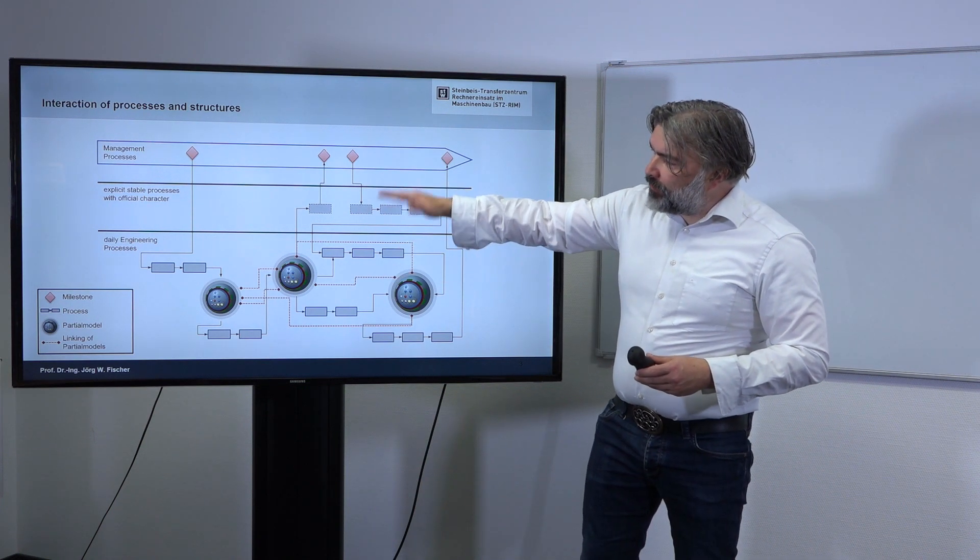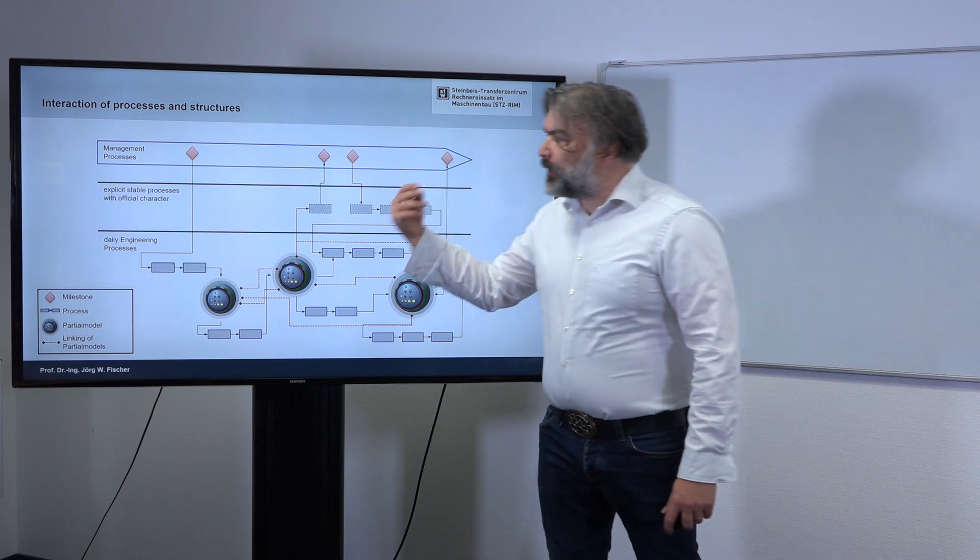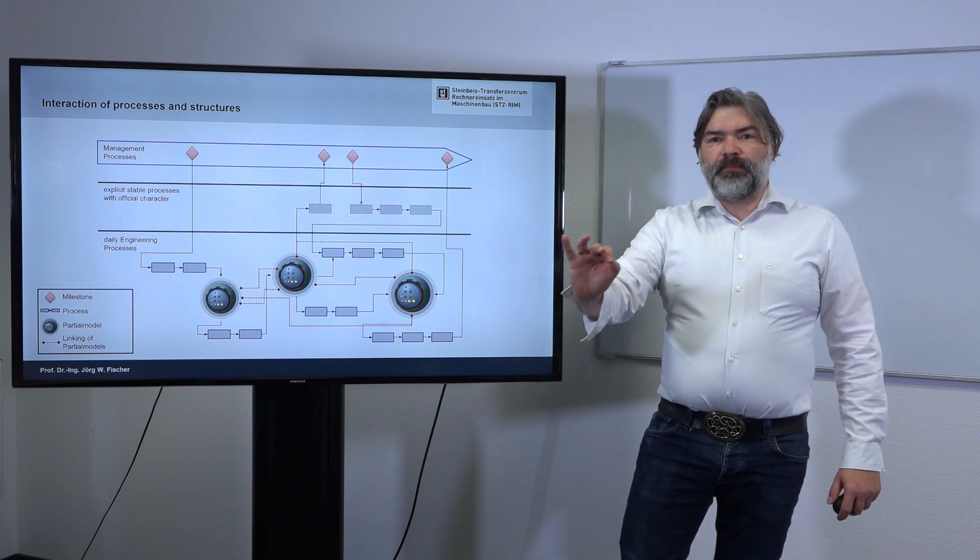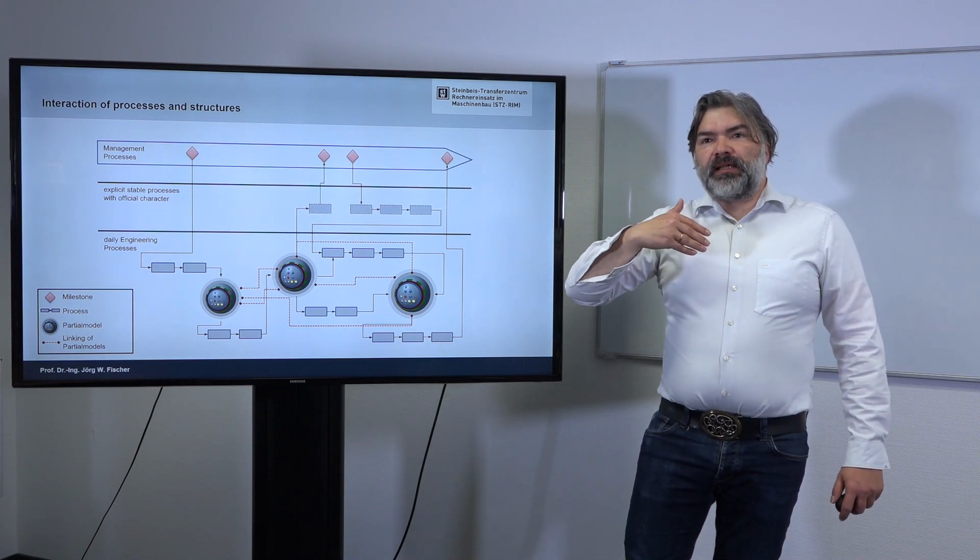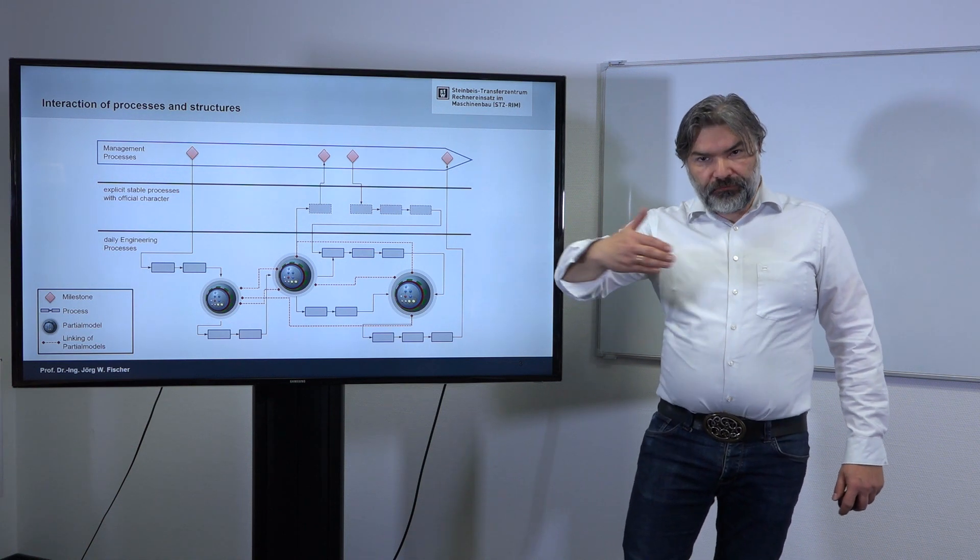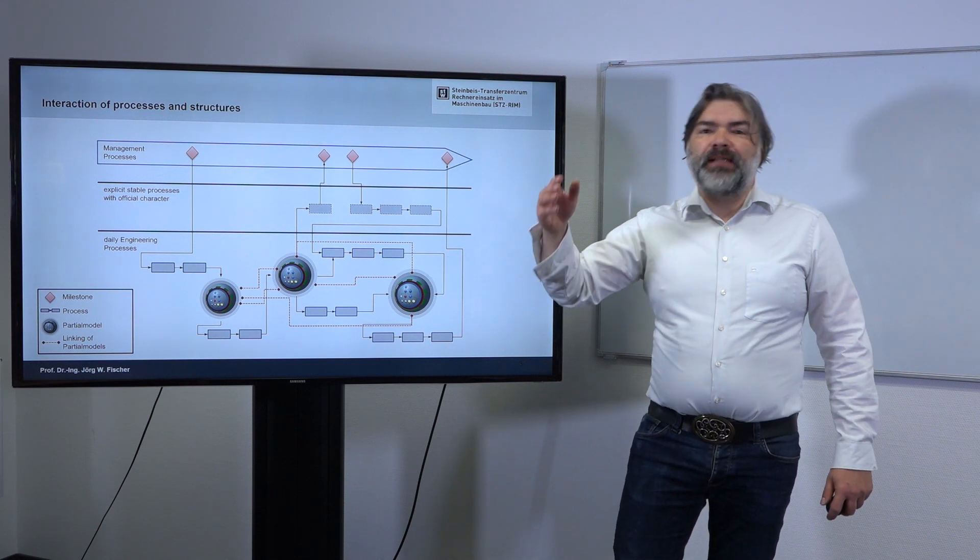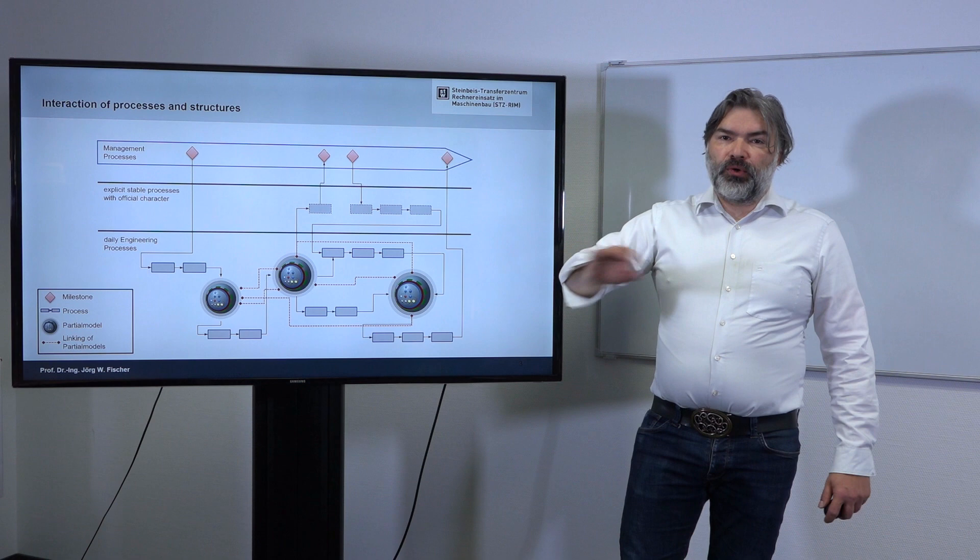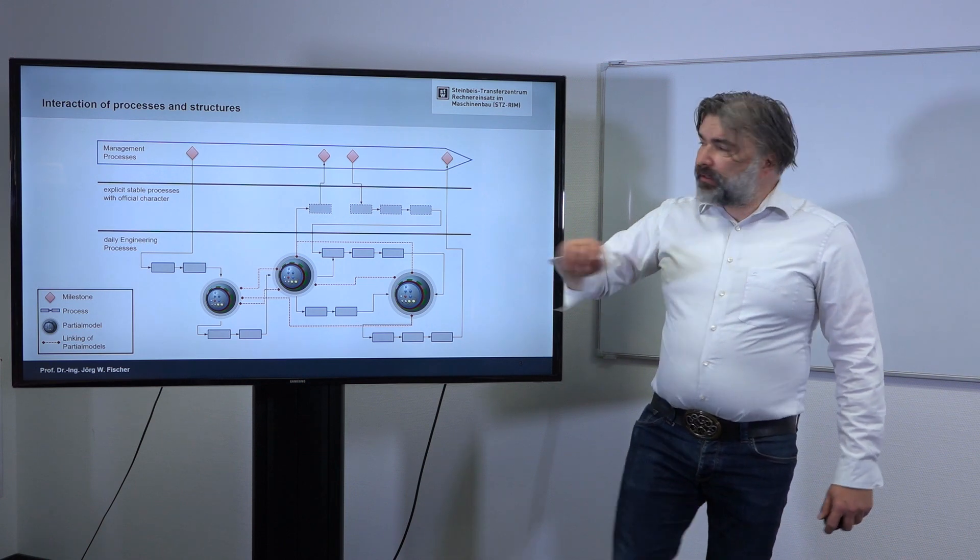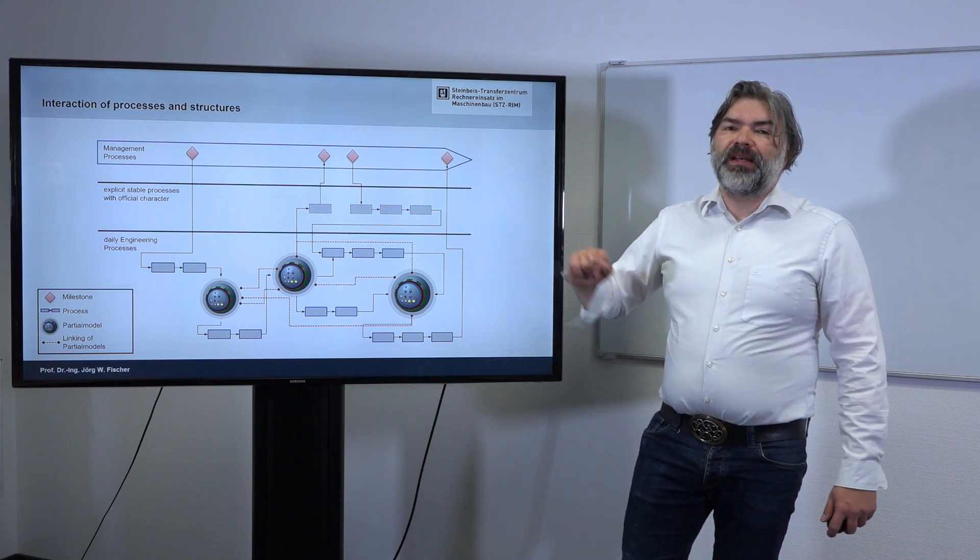Above the daily engineering processes we have the layer with the explicit stable processes which have an official character. What does that mean? If you have a release, the release is an explicit process. You say, now I start a formal process and now I do a release and now this is released. You bring this in a system with a workflow. This is what you typically are doing.